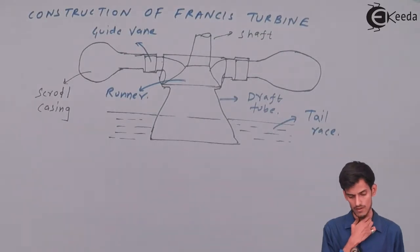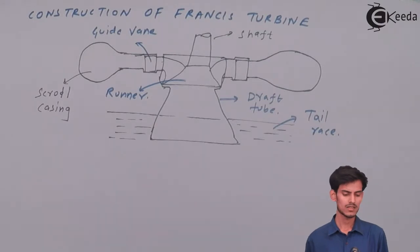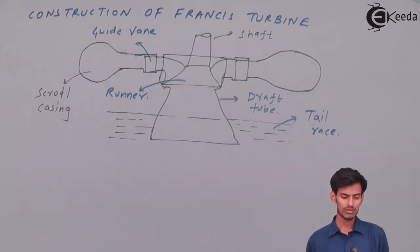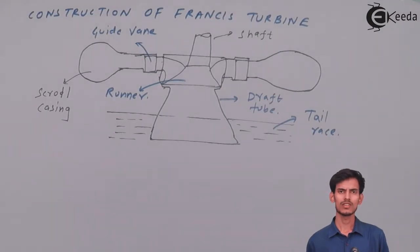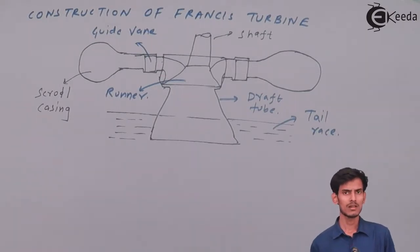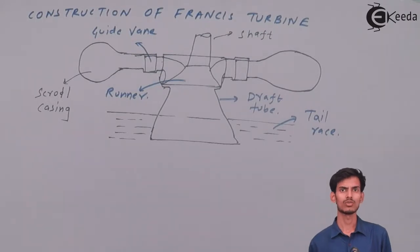As you can see in the front view, there is a scroll casing, then a part called guide vanes, then a runner, then something called a draft tube, and finally the tail race. As water enters the scroll casing from the penstock, it goes around the circumference and into the guide vanes. The guide vanes are made of an aerofoil shape so water passes through without friction, enters at a particular angle, and strikes the runner blades without any shock.